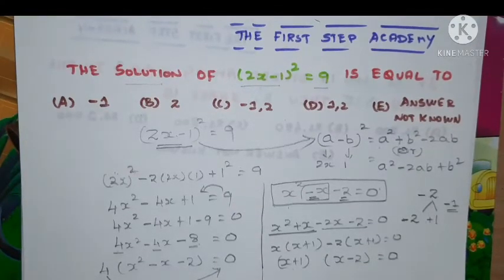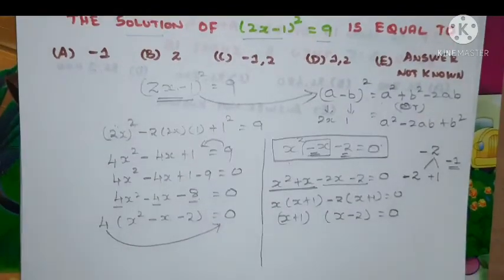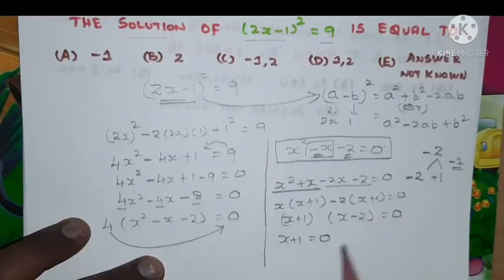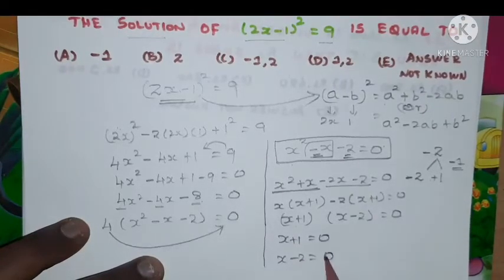So we got these two factors through which we are going to find the value. How do we find? Now x+1 = 0, same time x-2 = 0.